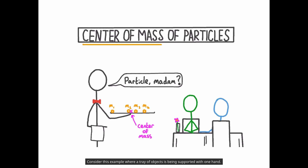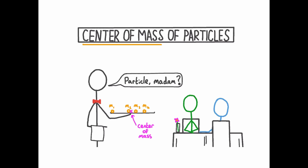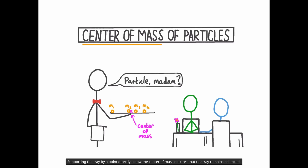Consider this example where a tray of objects is being supported with one hand. It's possible to treat the tray and the set of objects as if they were a single mass located at the centre of mass. Supporting the tray by a point directly below the centre of mass ensures that the tray remains balanced.